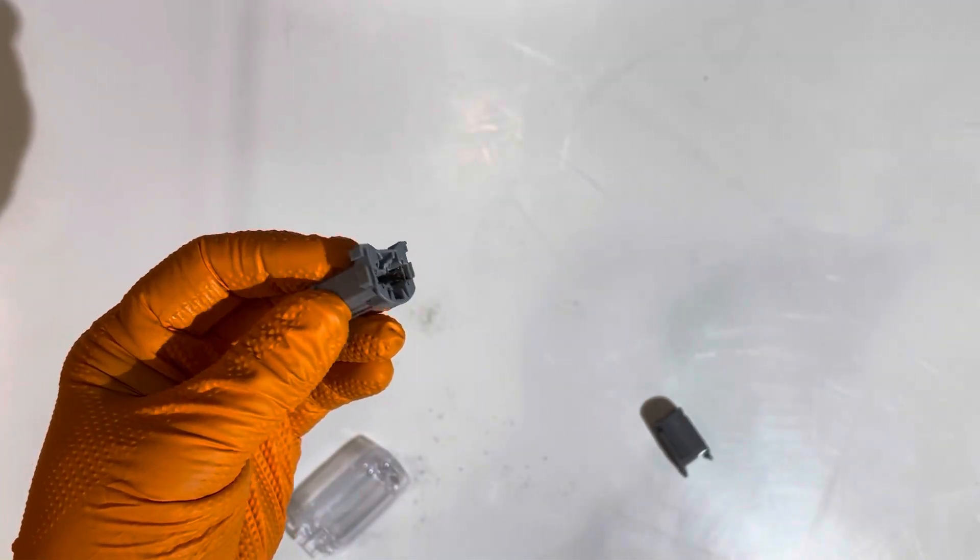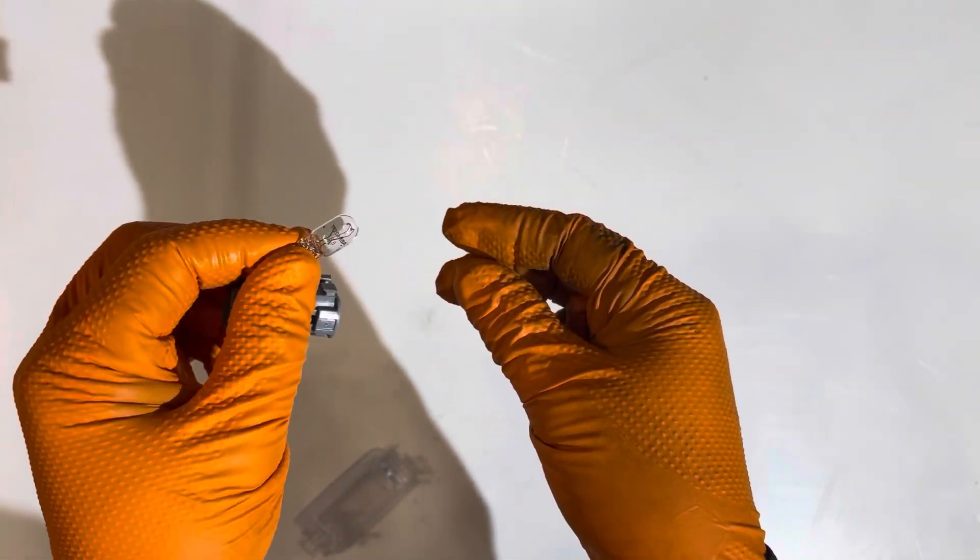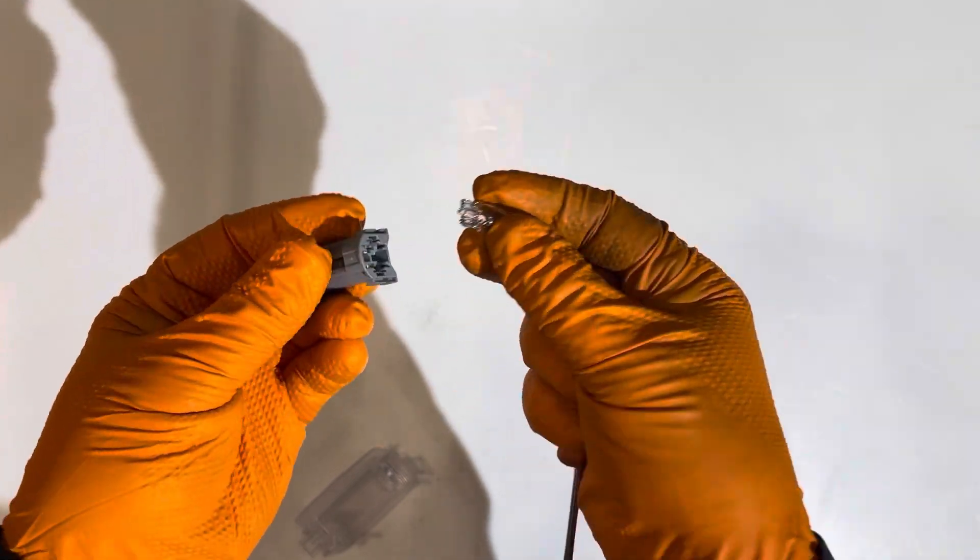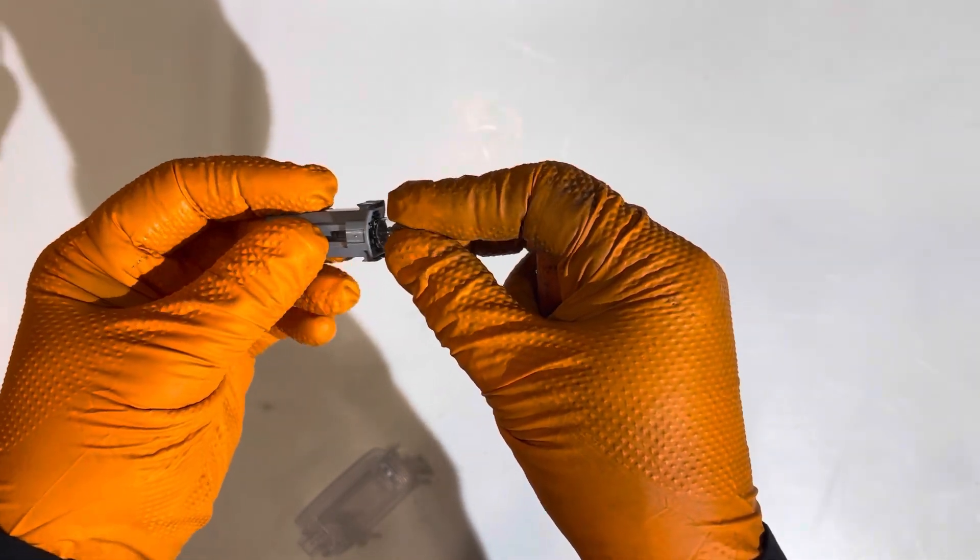Grab it and pull it out. If you're installing just a replacement regular incandescent bulb, it doesn't matter which way it goes back in. If it's an LED, make sure you have the polarity correct.